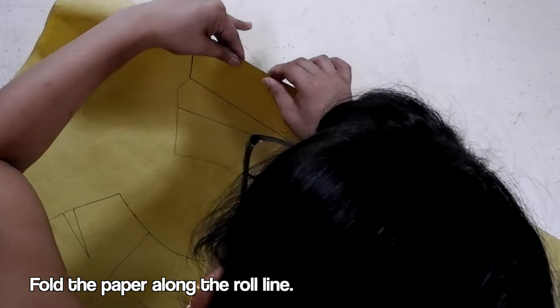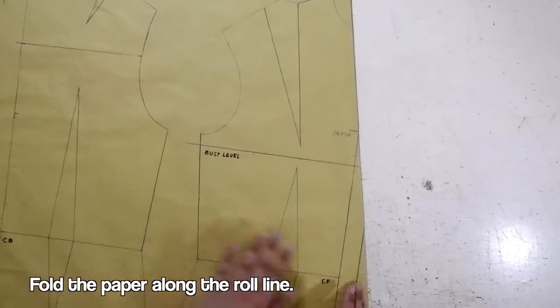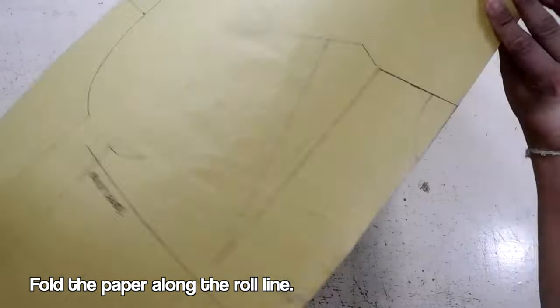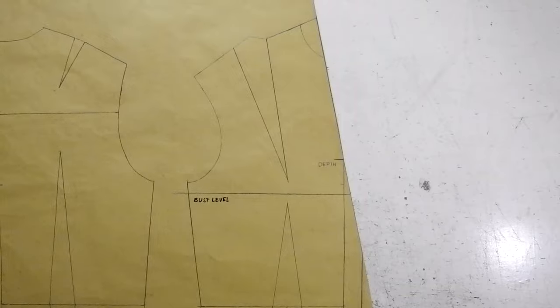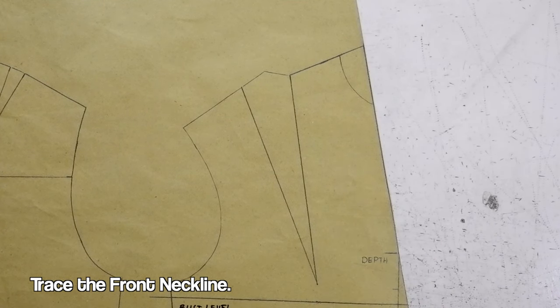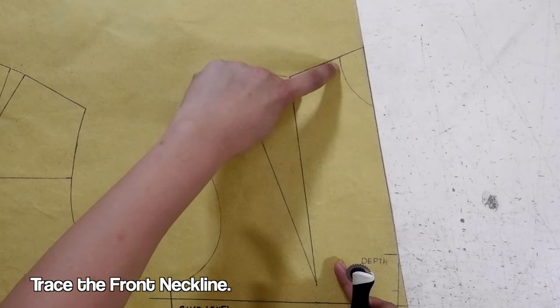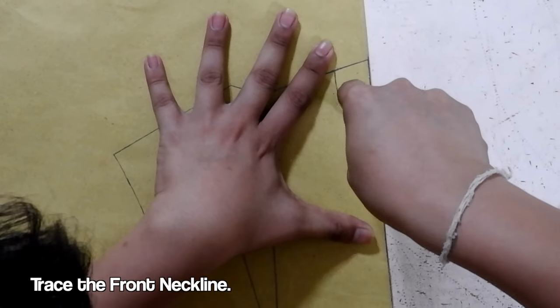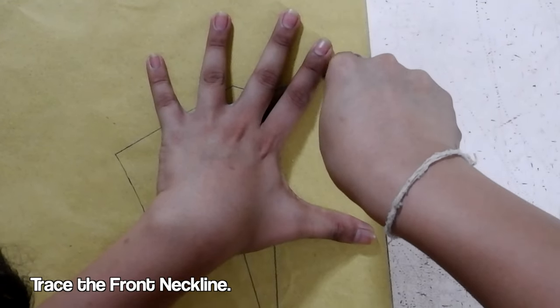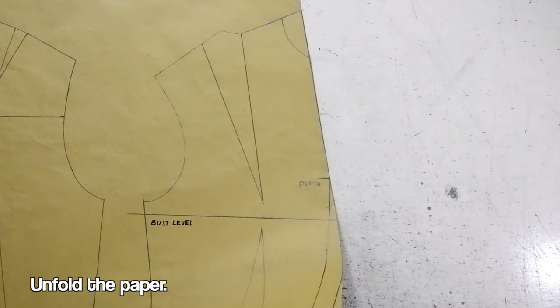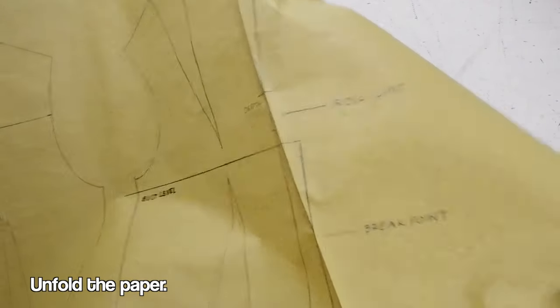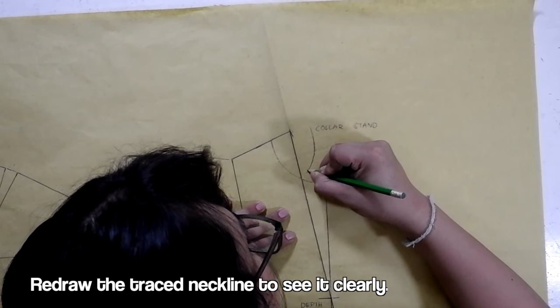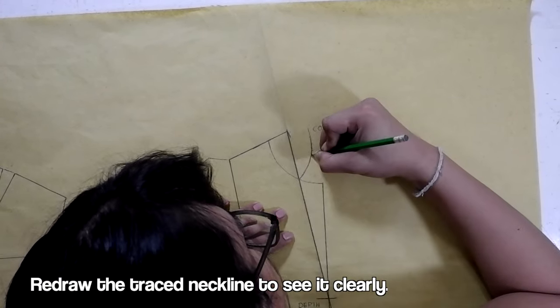To draft the lapel, first let's fold our paper along the roll line. Next, using your trusty tracing wheel, we are going to trace the front neckline. After the tracing, let's open our paper again. And by the way, we draw the traced front neckline to see it clearly.